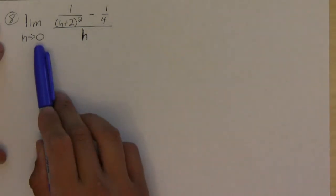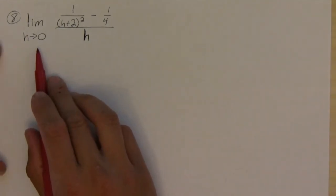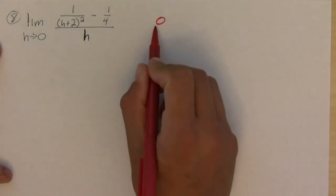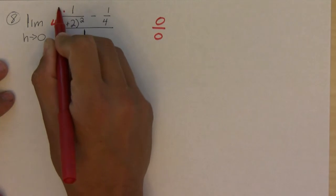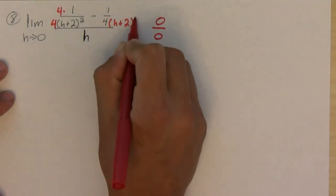Okay, so in this problem, this is a complex fraction and probably the best thing we can do after we plug it in is to simplify it. So let's say we plug in 0 for h. Notice that we would get a 1 over 4 minus 1 over 4, so we basically get another indeterminate form 0 over 0. So we simplify. To simplify, we have to combine the two fractions on top into one, and so we need to get a common denominator. So basically this one needs to be multiplied by a 4, and this one needs to be multiplied by an h plus 2 squared.